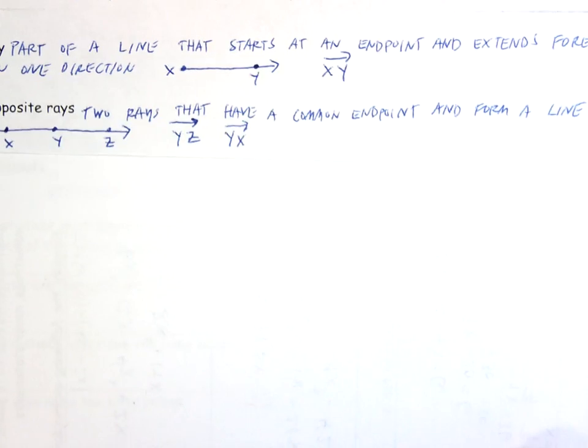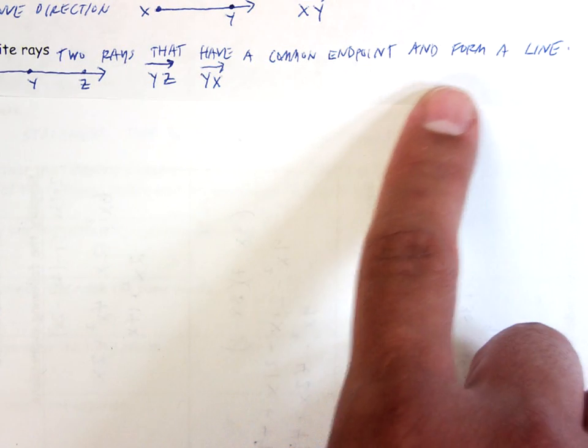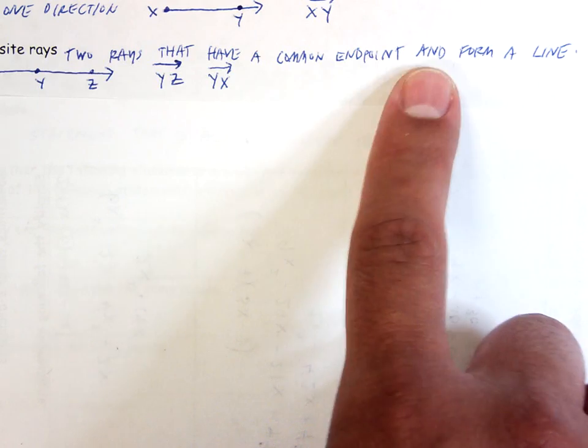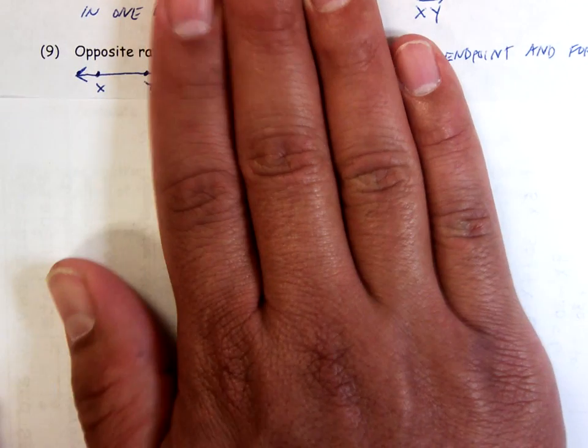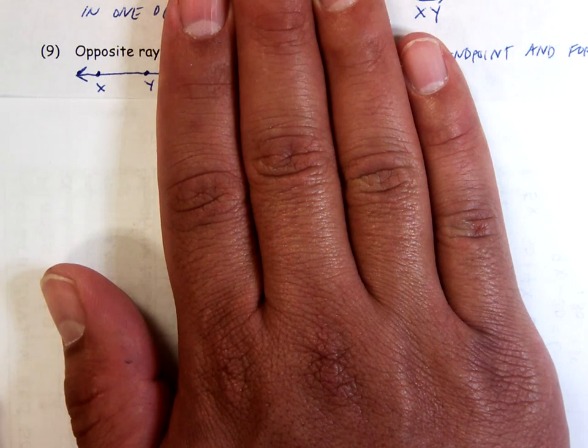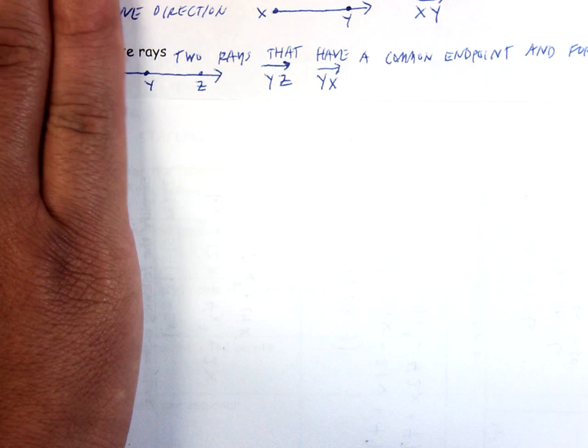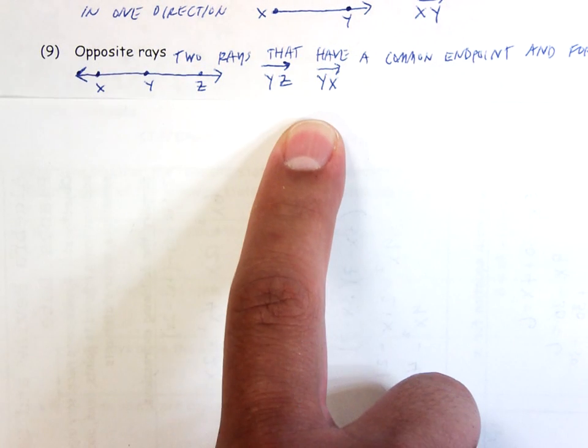Opposite rays. As it says, two rays that have a common end point and they connect to form a line. They're going two different directions. They connect and do form a line. So these are opposite rays. So there, if I cover that, that's ray YX. Goes from Y in the direction of X. And this is ray YZ. And so if I'm naming them both, there they are. YZ and YX.